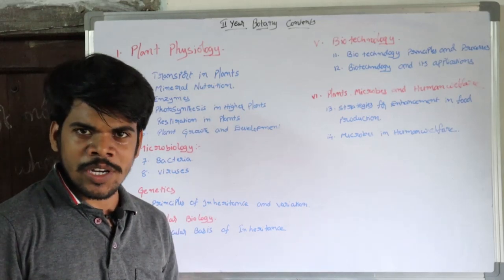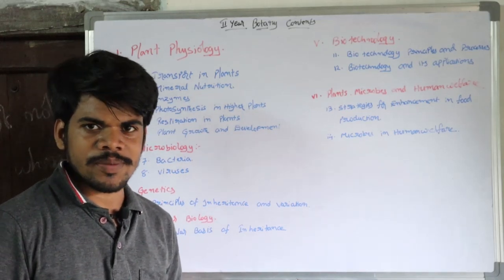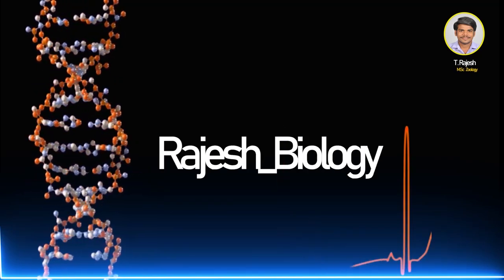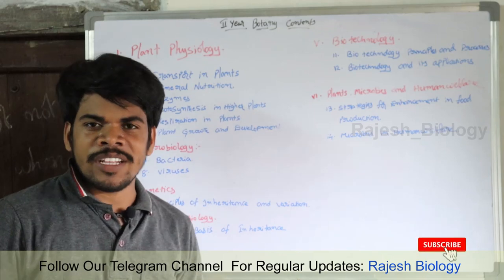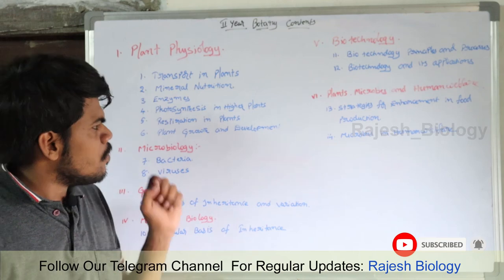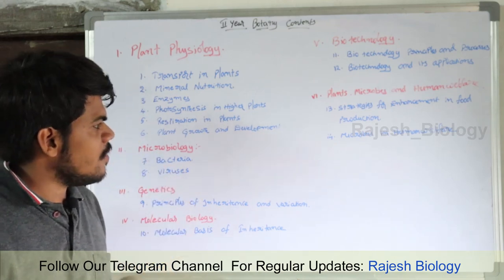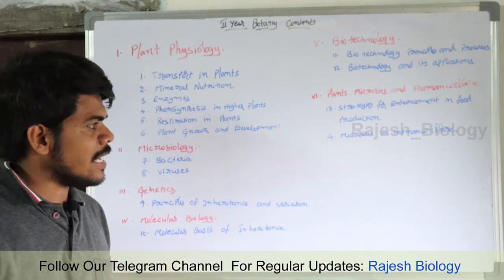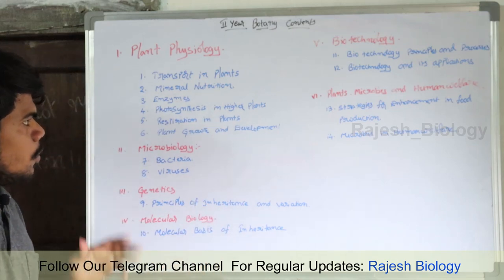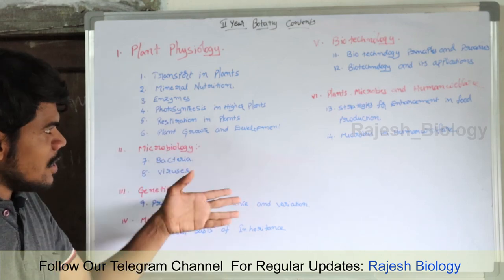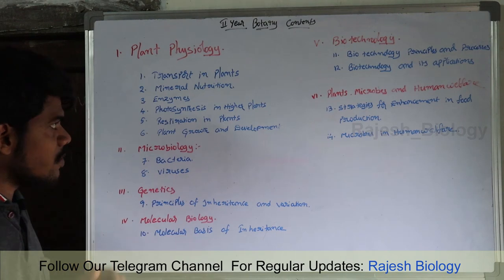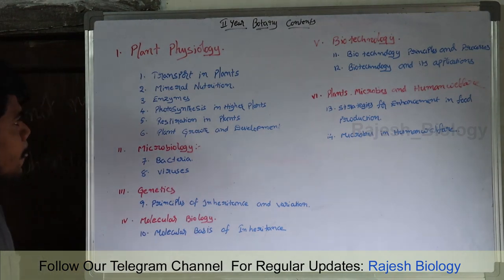Hello students, welcome to our channel Rajesh Biology. I'm Rajesh, MSc. Some of my students asked me to teach botany also, so in this video I'm going to introduce the contents of the second year botany which are present in the state book — that means according to Andhra Pradesh and Telangana state books. In botany there are six units and 14 chapters; some units have only two chapters, some units have six chapters.